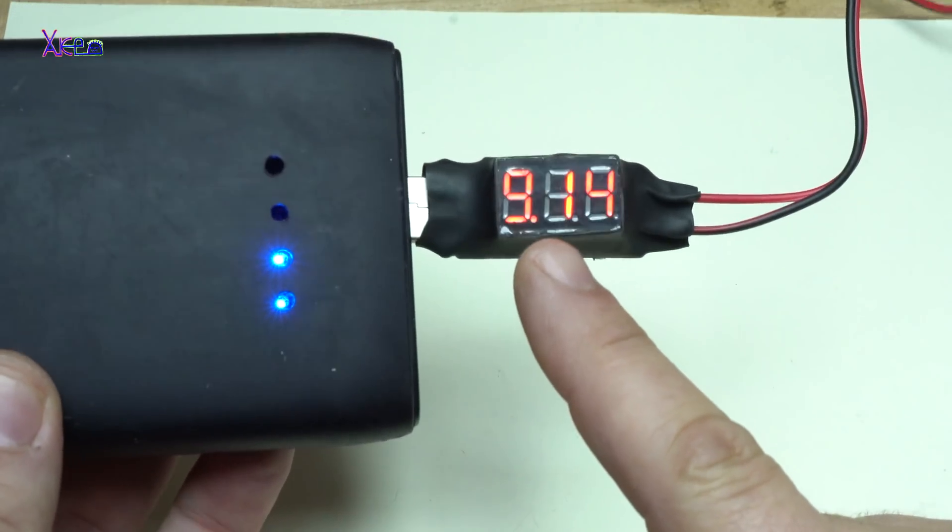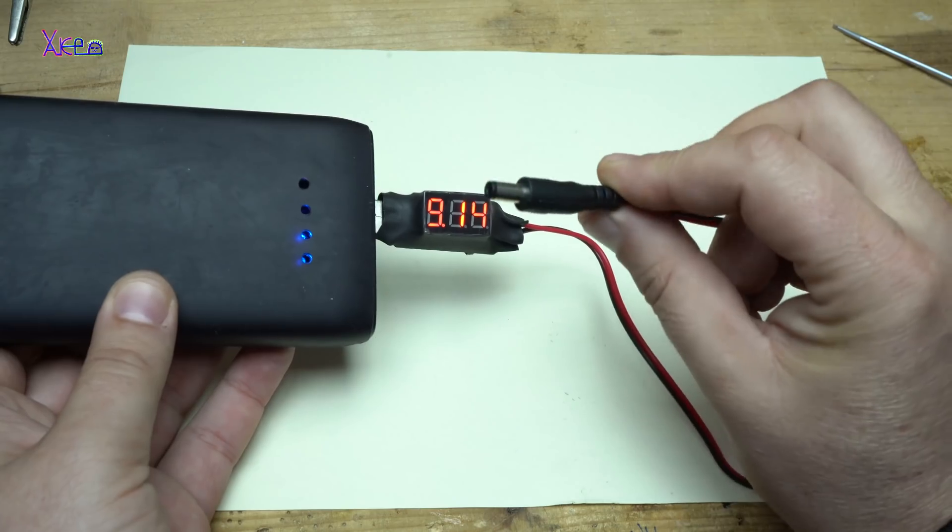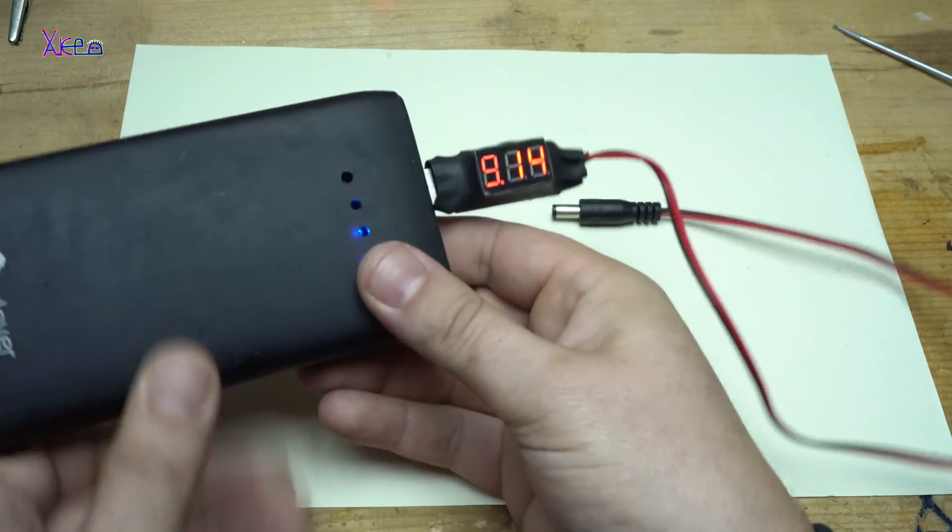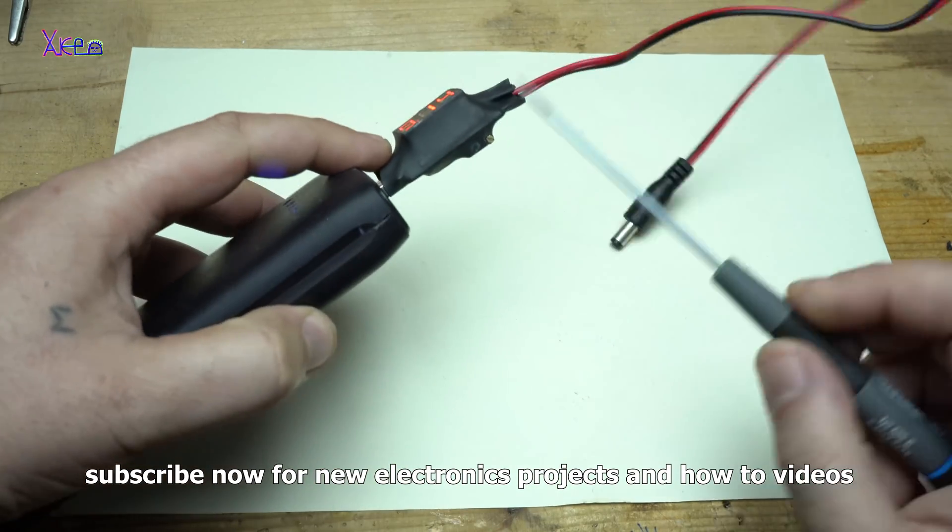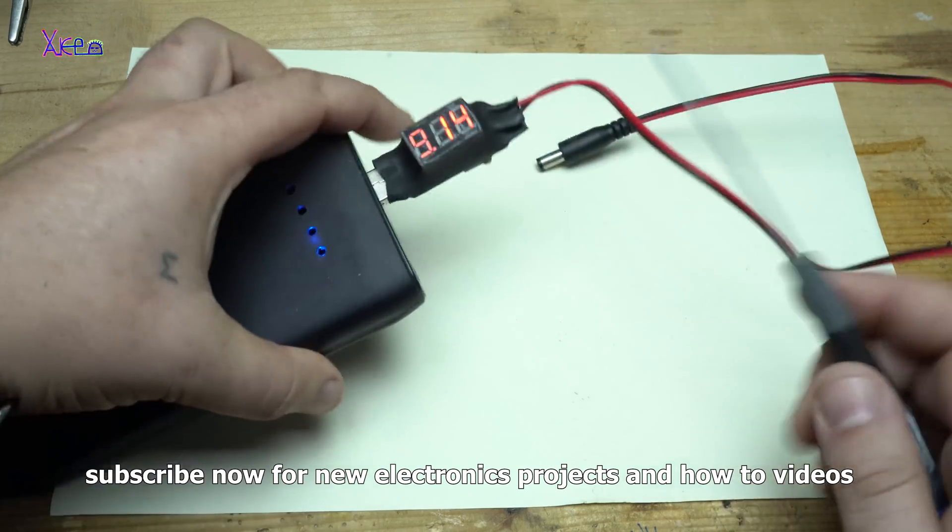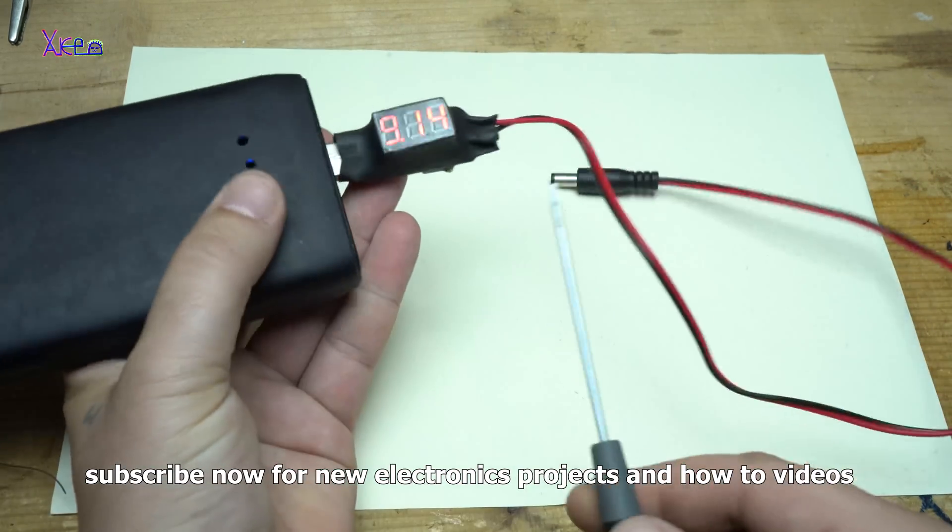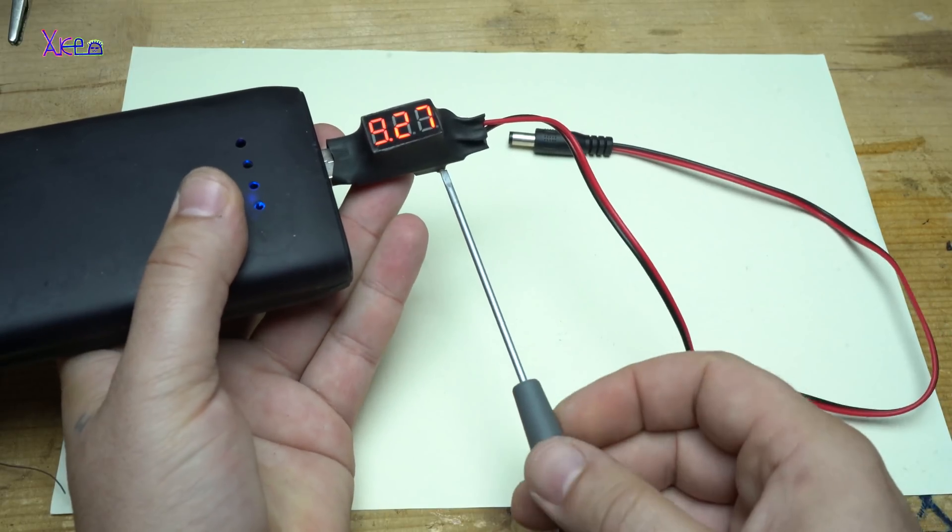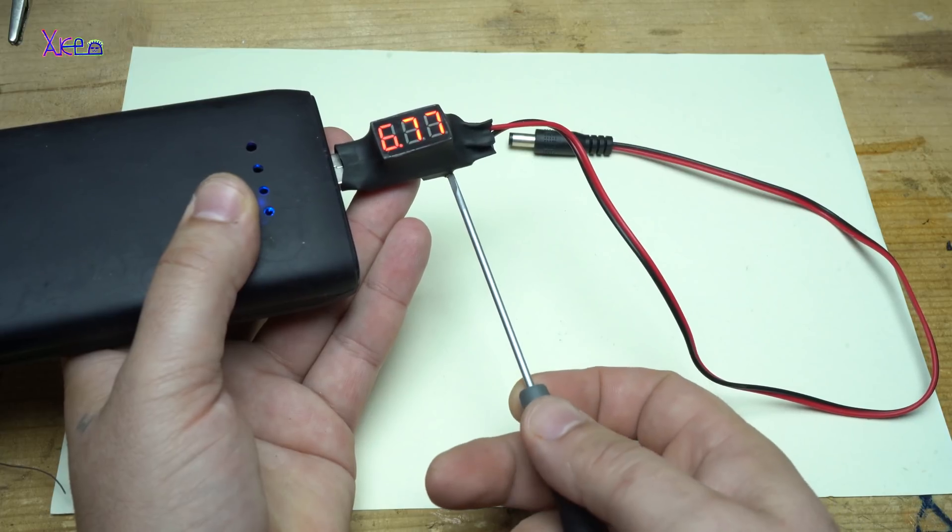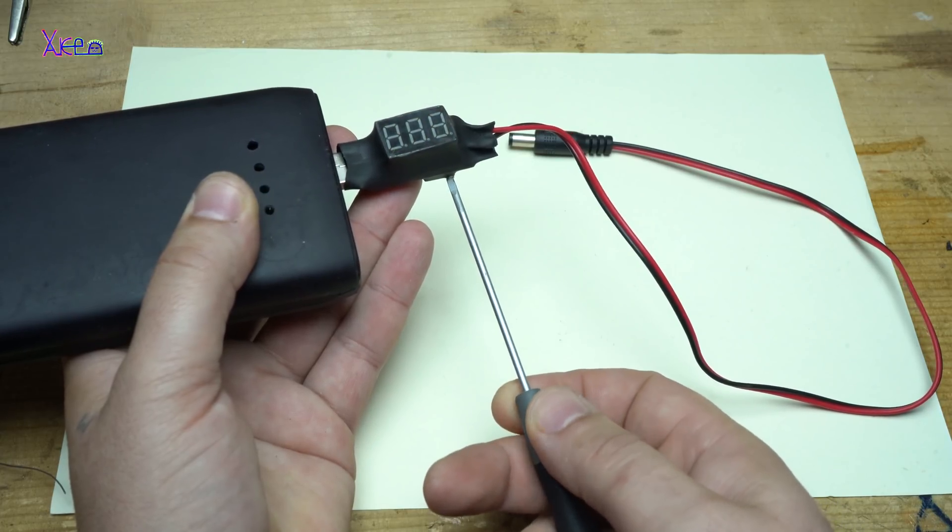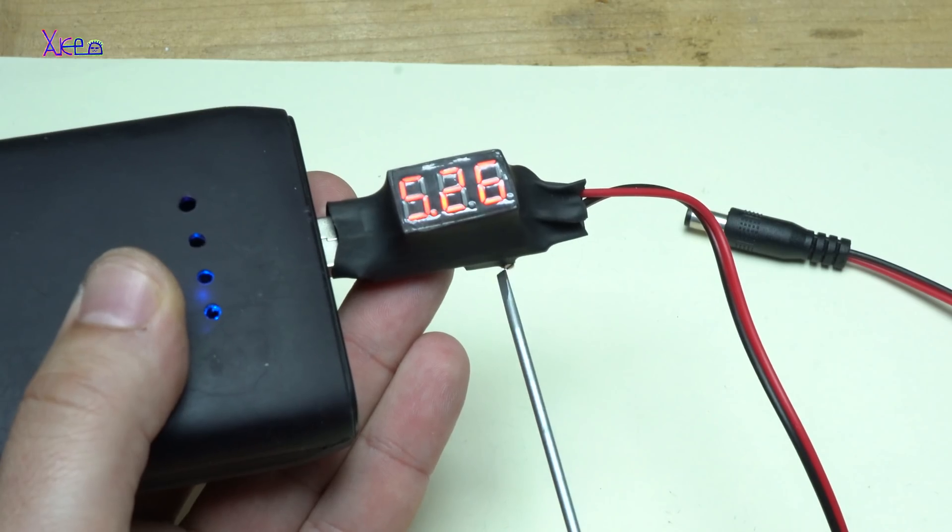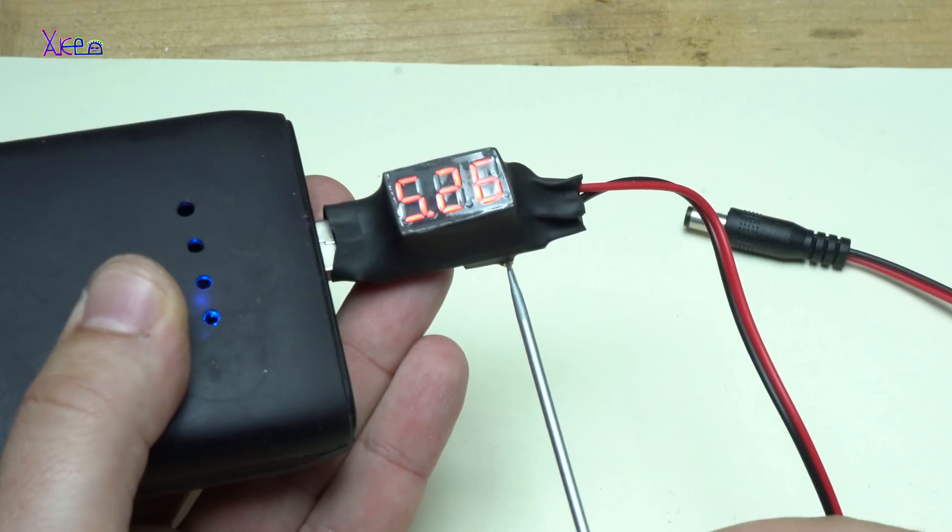This tiny screw is for adjusting the voltage. Let me show you. You can drop the voltage or increase the voltage.